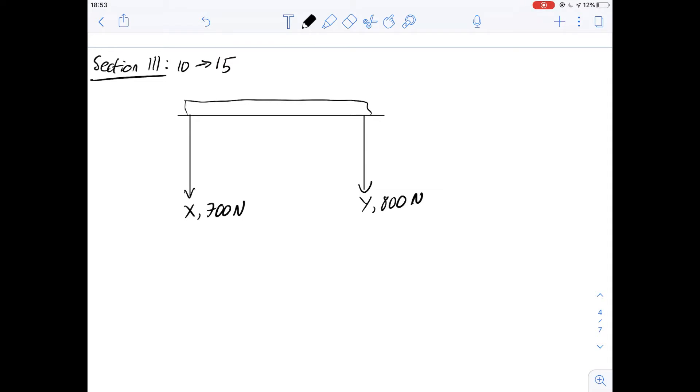Hi, I'm Carl and in this video we're going to have a look at questions 10 to 15 of section 3 of the Green Booklet. The first set of questions is 10 to 13 and it's about the weight of a patient on a bed.